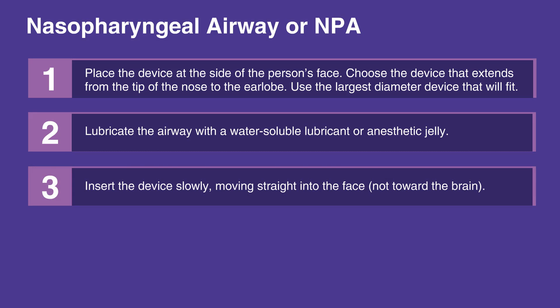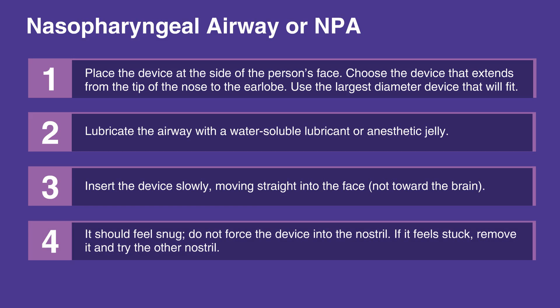Lubricate the airway with a water-soluble lubricant or anesthetic jelly. Insert the device slowly into a nostril, moving straight into the face, not toward the brain. It should feel snug. Do not force the device into the nostril. If it feels stuck, remove it and try the other nostril.